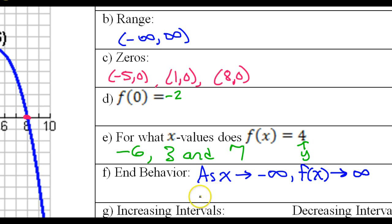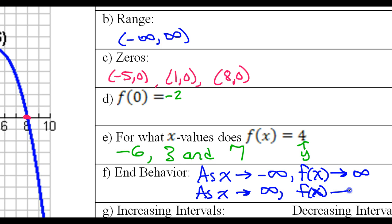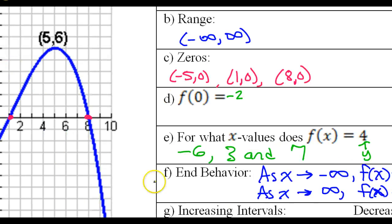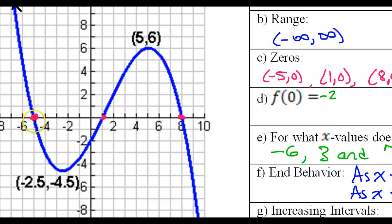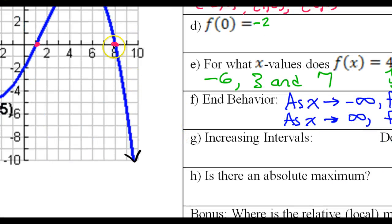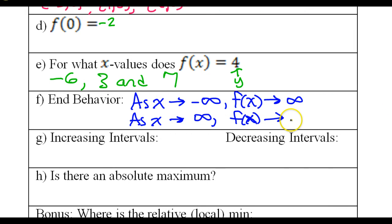That was the left side. For the right, we say: as x approaches positive infinity. As we go to the right on this graph, in the end I wind up going down forever. So as x approaches positive infinity, the function goes towards negative infinity — the y values go to negative infinity. That's the end behavior.